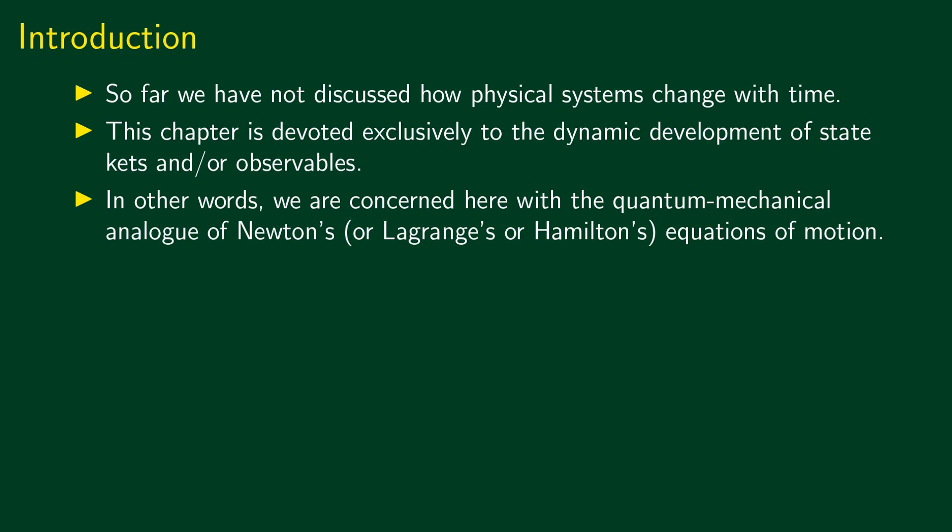One thing we have not discussed yet is how quantum mechanical systems actually change with time. In this chapter, we will be interested in the dynamic development of the state or observables. There are different ways in which we can formulate this. In other words, we are concerned with the quantum mechanical analog of Newton's equations, Lagrange's equations, or Hamilton's equations of motion — the different equivalent ways to describe classical mechanical time evolution.